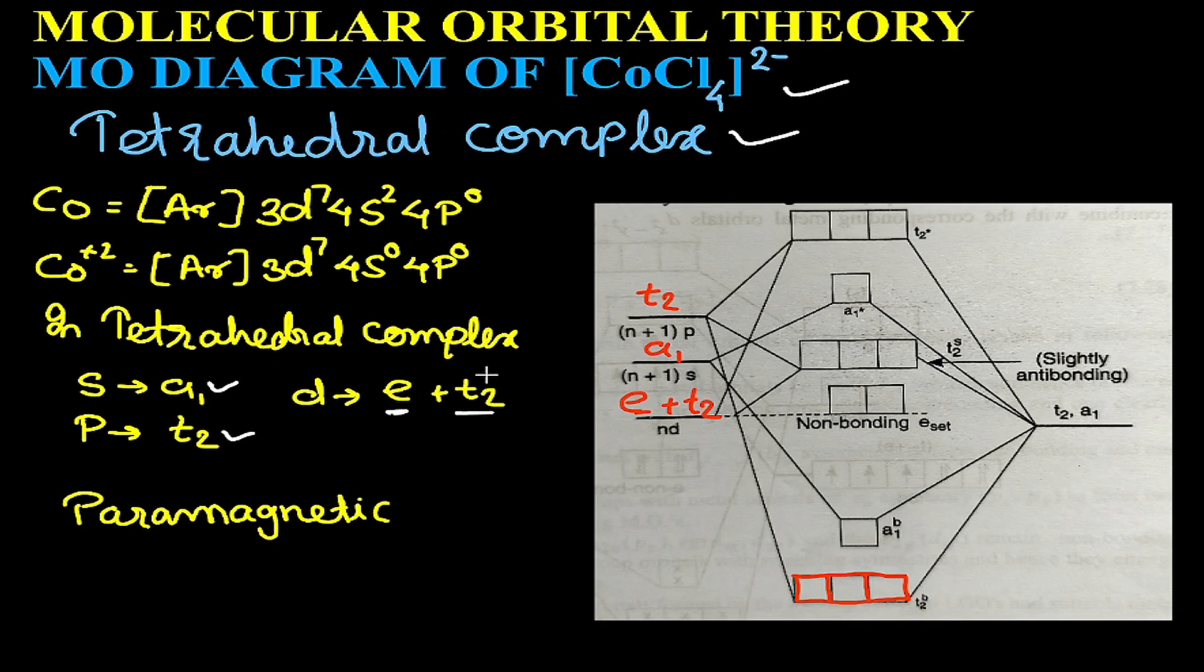So in tetrahedral complexes we have two T2 orbitals, and similarly the ligand group orbitals are also T2 and A1.